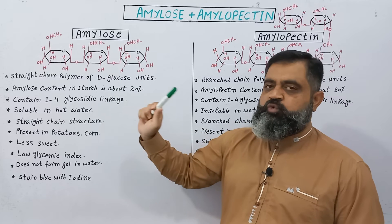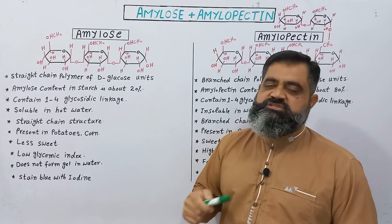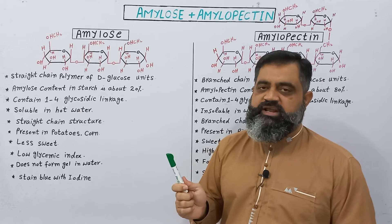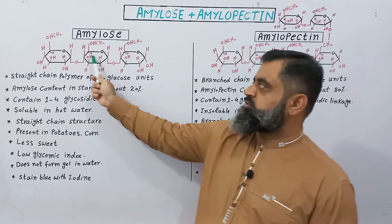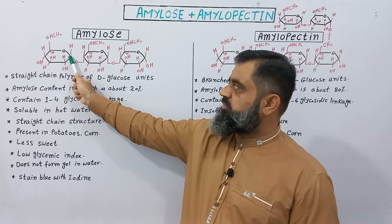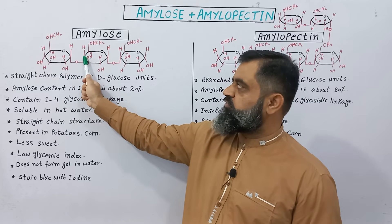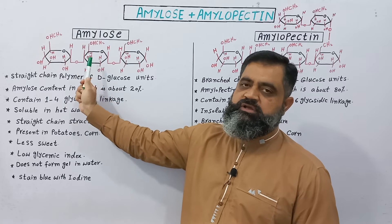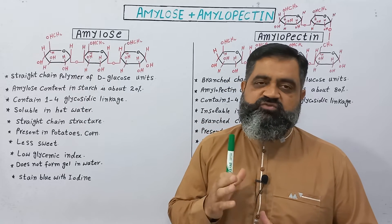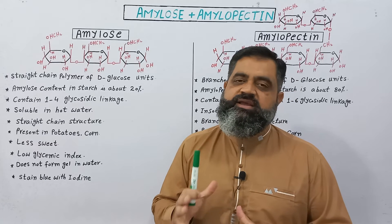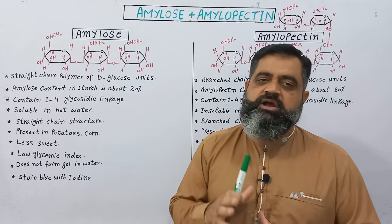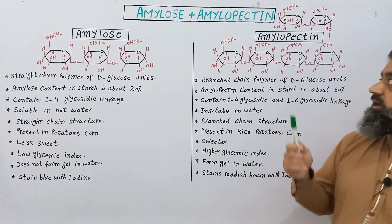Amylose starches have only one type of linkage, which is a glycosidic linkage called the alpha 1-4 glycosidic linkage. This is because the bond connects the number one carbon of one glucose molecule to the number four carbon of the next glucose molecule. This alpha 1-4 glycosidic linkage is the only type of bond found in amylose.